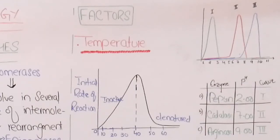As temperature increases, enzyme activity will increase until the optimum temperature is reached. Beyond the optimum temperature, the enzyme will be denatured and activity will drop completely.